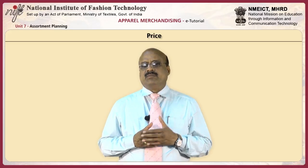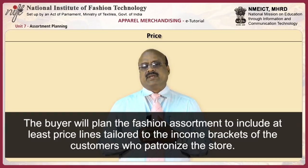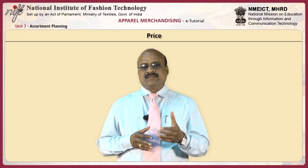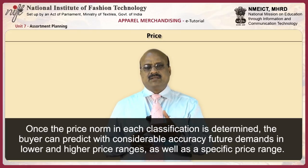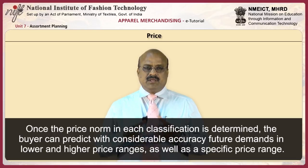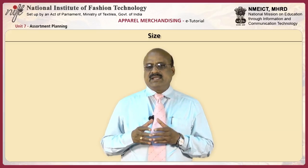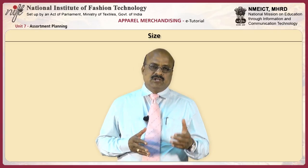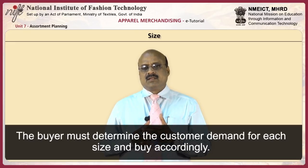Since consumers represent many income levels, the buyer will plan the fashion assortment to include at least three price lines tailored to the income brackets of customers who patronize the store. Such planning will enable customers to have a choice in the price of the item bought. Once the price norm in each classification is determined, the buyer can predict with considerable accuracy future demands in lower and higher price ranges. Size is an important factor with most fashion merchandise — true not only of fashion apparel but also of many home furnishings.